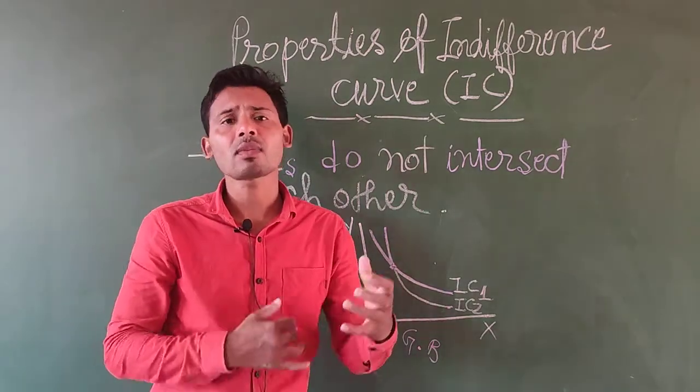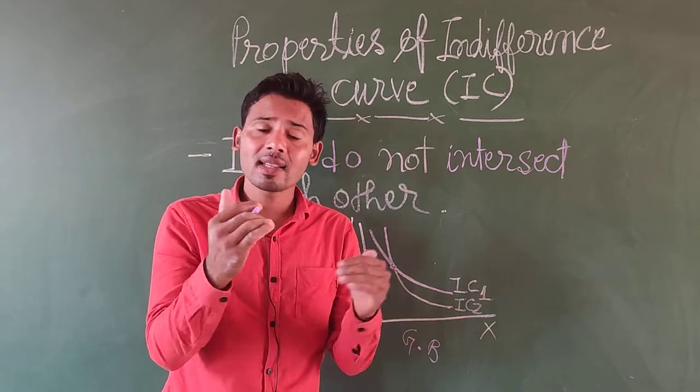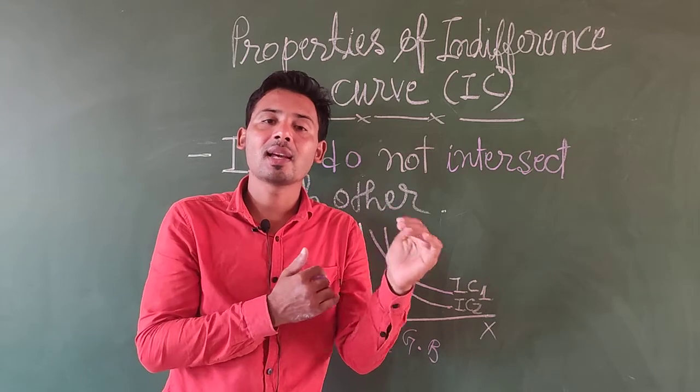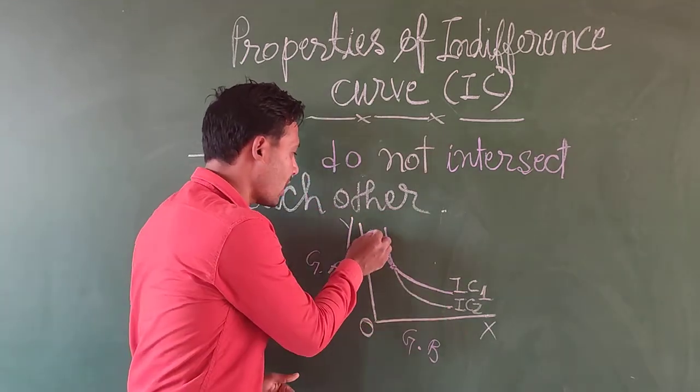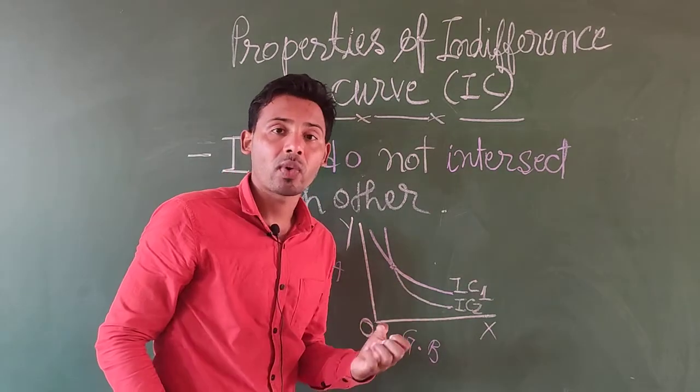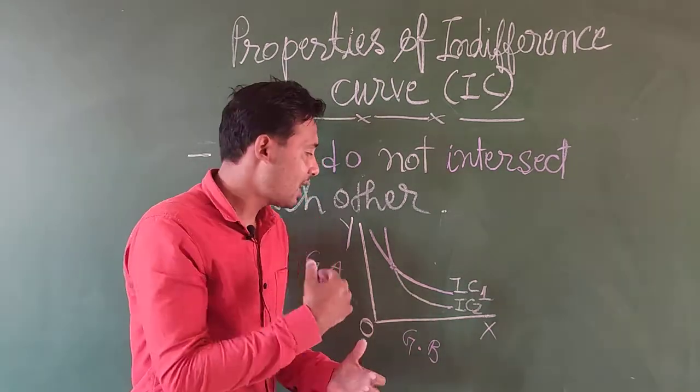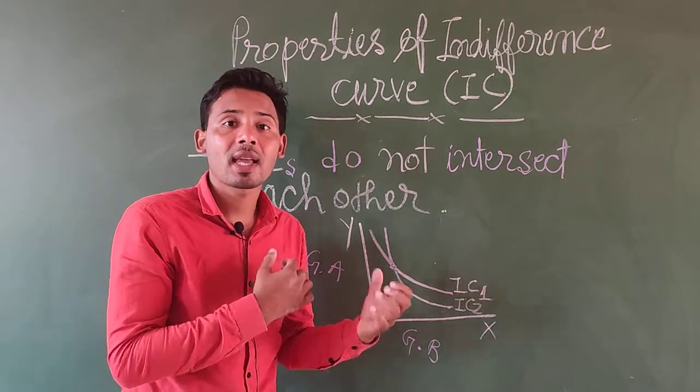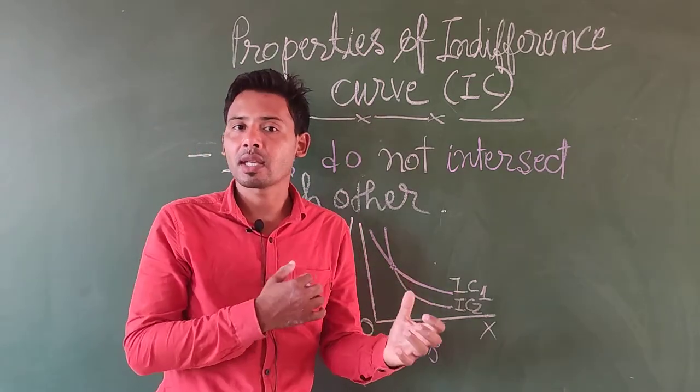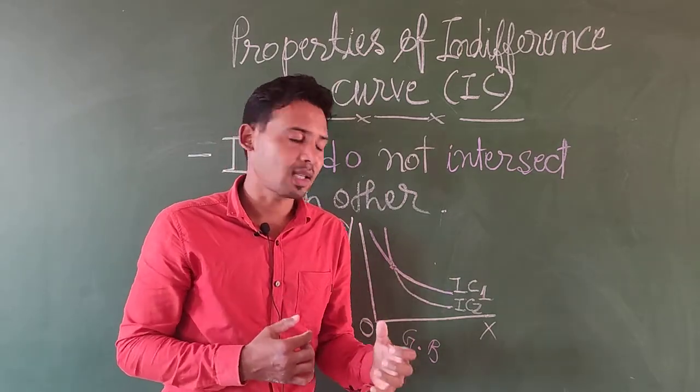So our assumption is IC2 is the lower level of satisfaction level. And therefore, we are concluding that ICs cannot intersect each other. And ICs do not intersect each other.